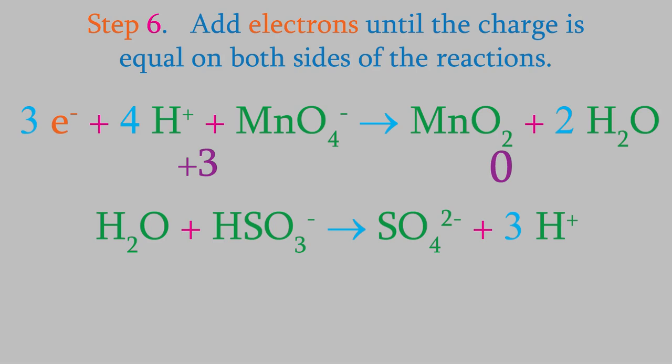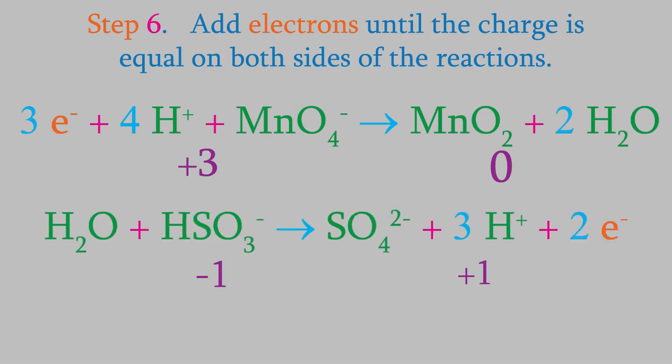Now we'll try the oxidation reaction. There's a water molecule and a bisulfite ion on the left, which gives a total charge of minus 1. On the right, there's a sulfate ion and 3 H plus ions, for a total charge of plus 1 on the right. In order to balance the charges, we need to add 2 electrons to the right side.